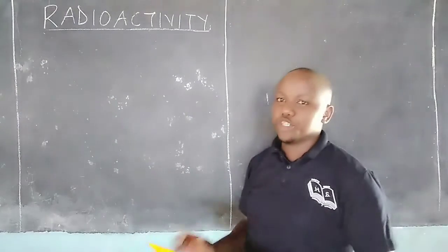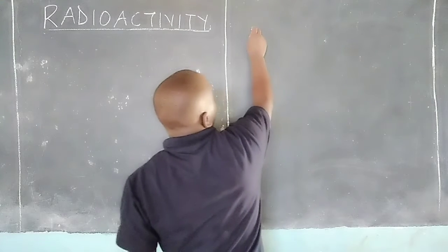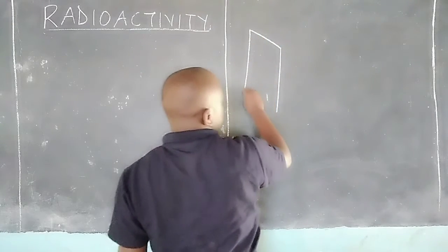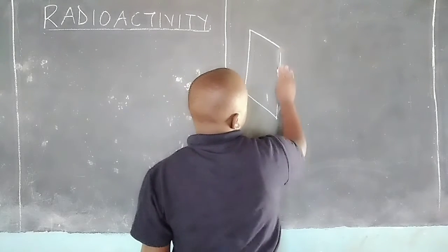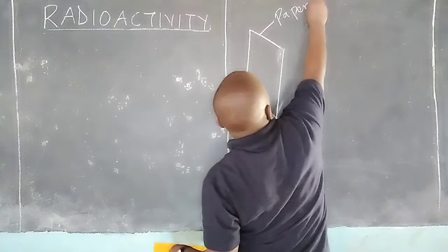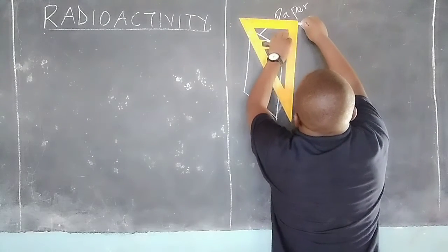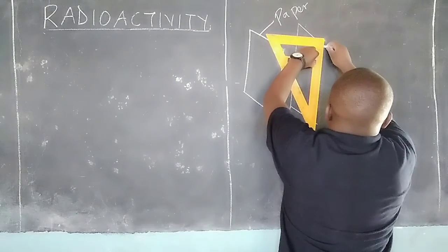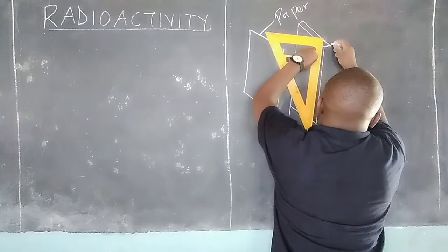Therefore we are going to study their penetration power. We are going to consider a sheet of paper placed before radioactivity — a sheet of paper placed on a table like that. Then after the sheet of paper, an aluminium foil, which is a bit thicker than the paper.